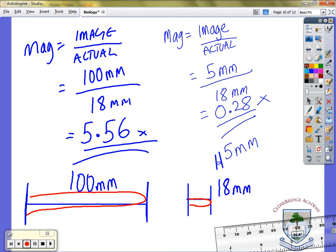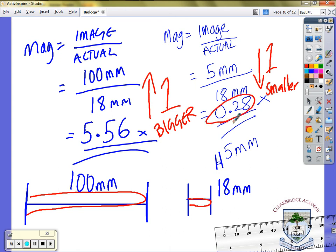Anything greater than 1, anything greater than the number 1 means that it's bigger and anything less than the number 1 means that it's smaller. Okay so it's the same way if you had to multiply something by 0.28 the number would shrink, if you multiplied something by 5.56 the number would grow. Okay so greater than 1 is bigger, smaller than 1 is smaller. Cut and print.